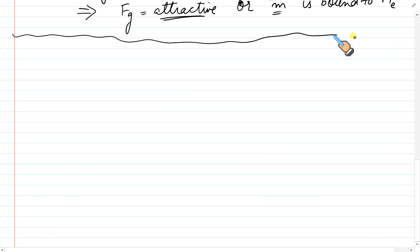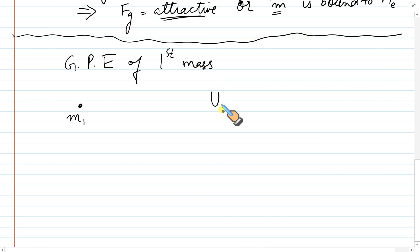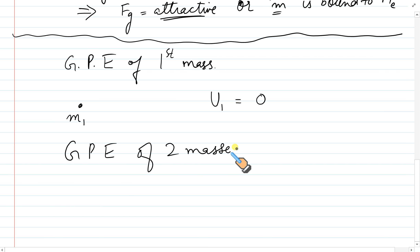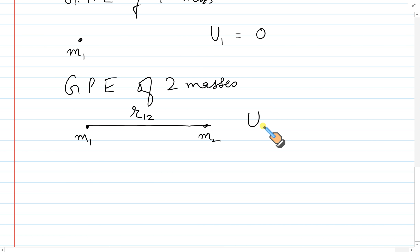From its definition: gravitational potential energy of the first mass is zero, کیونکہ پہلے mass m1 کو لانے کے لیے کوئی force attract یا repel نہیں کر رہی تھی۔ Gravitational potential energy of two masses m1 and m2 at distance r12 = −G·m1·m2 / r12.